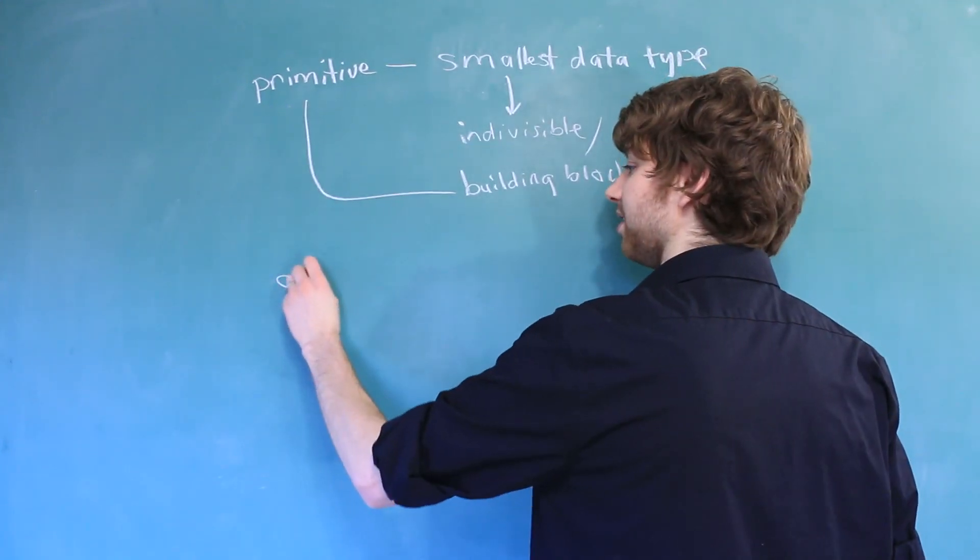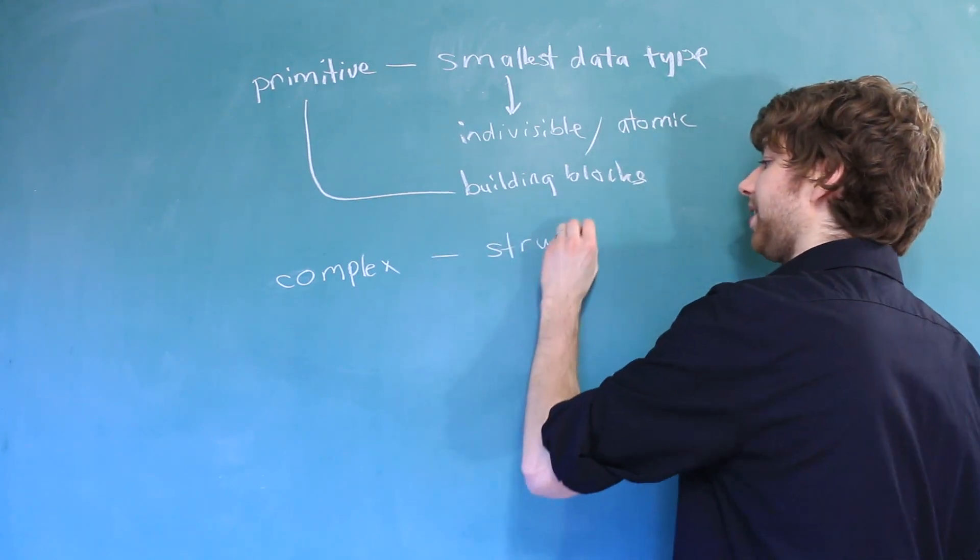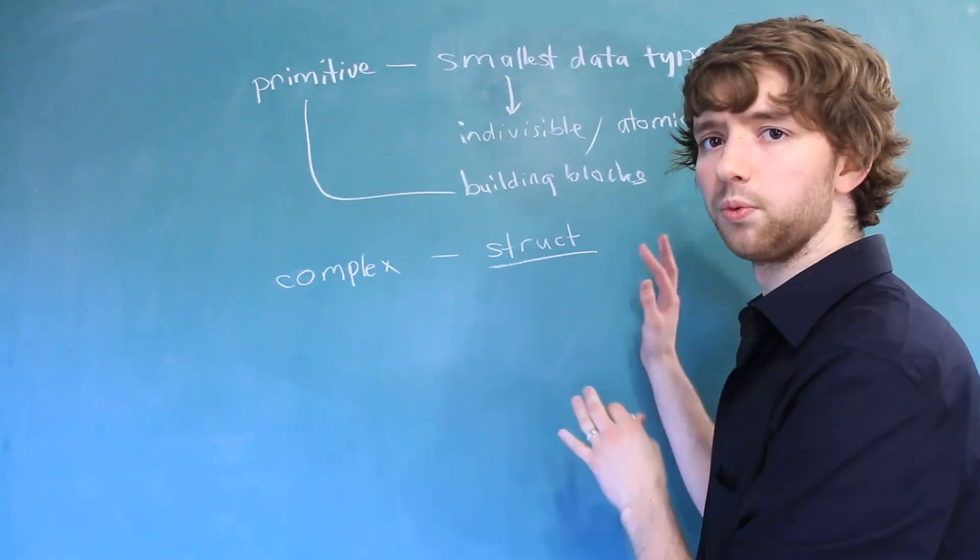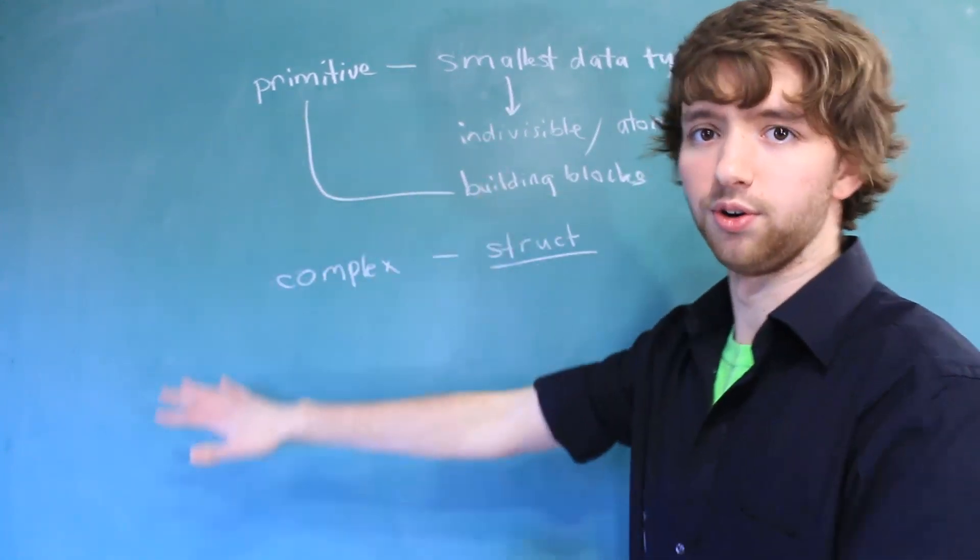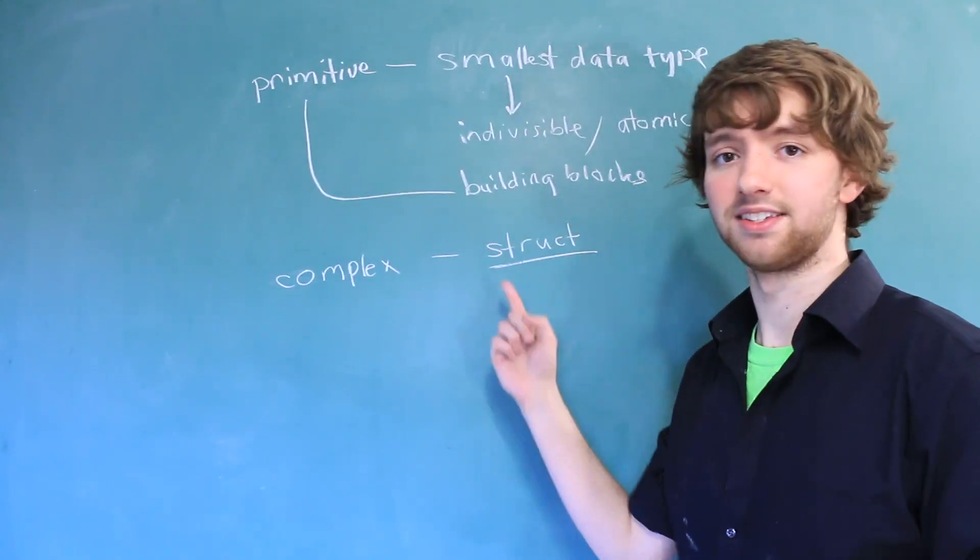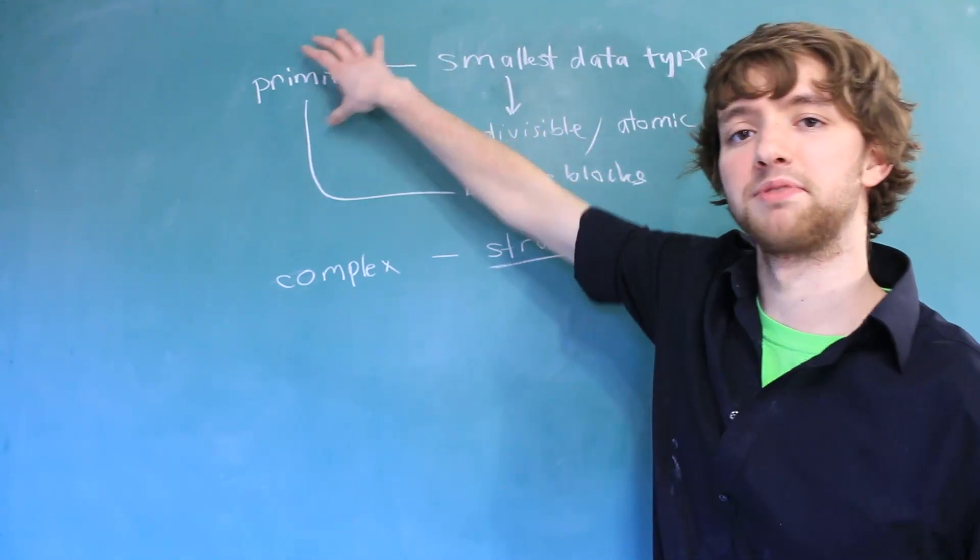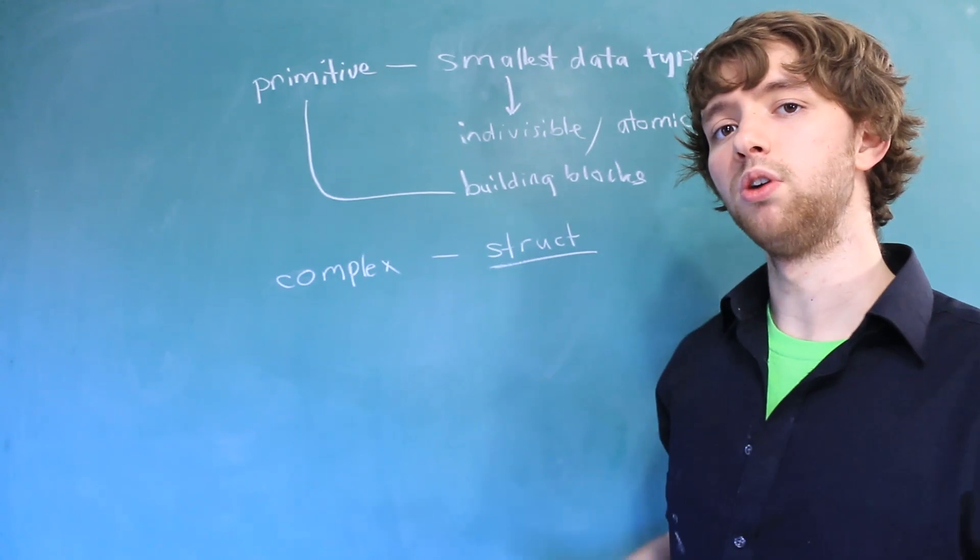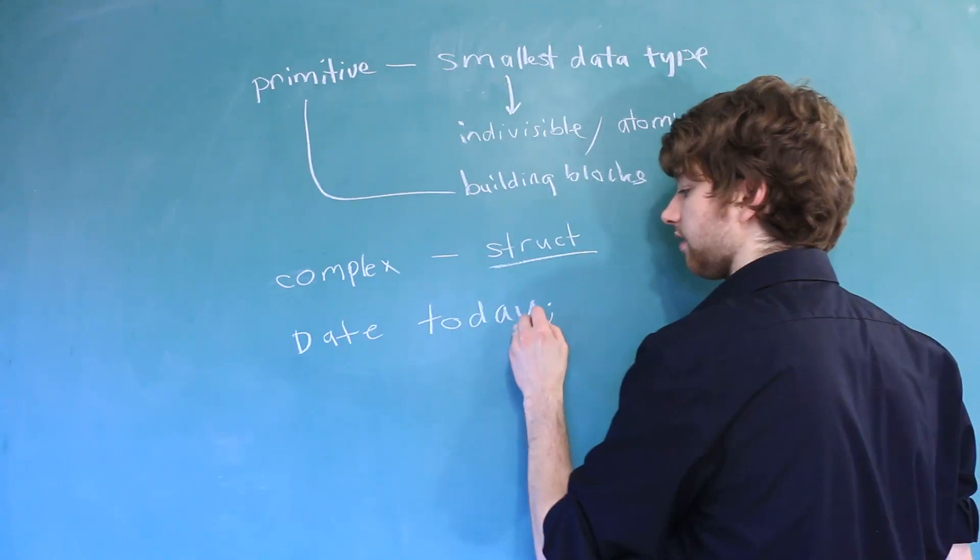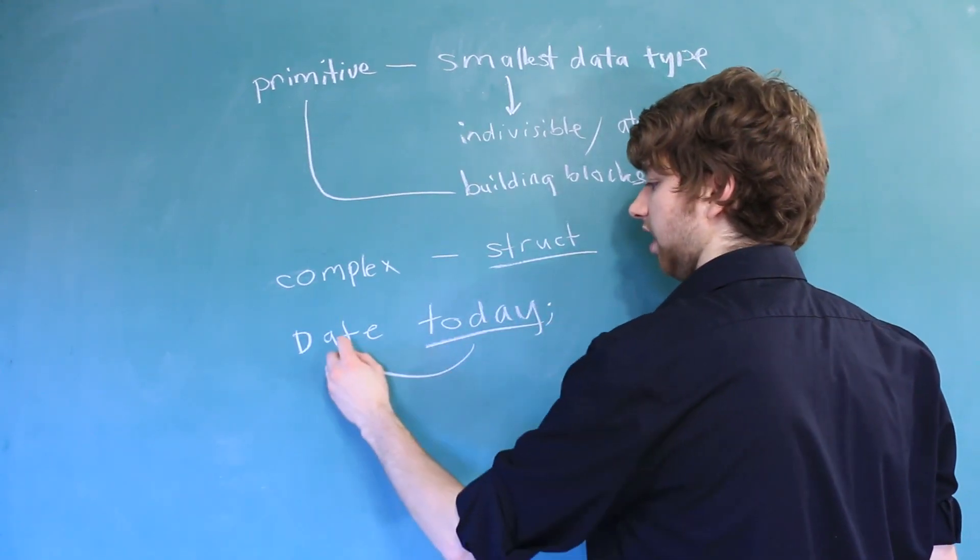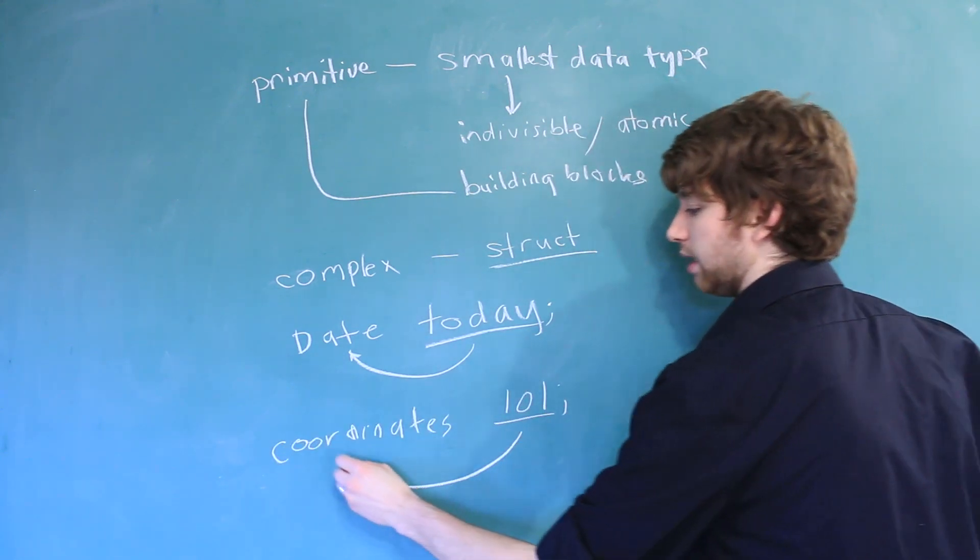I just used a word that you should know. The other type of data type is complex. Now a perfect example of a complex data type is a struct. And we can define our own structs. We are not going to get into the details of how to make structs right now because it's way down the road. But it is important to know that they exist. A struct is essentially using these primitive data types to make something more complex. For example, we could make a struct for dates. So then we can make a variable like this. You can see that the variable today is of type date. Or we could have something like this. You can see that the variable lol is of data type coordinates.